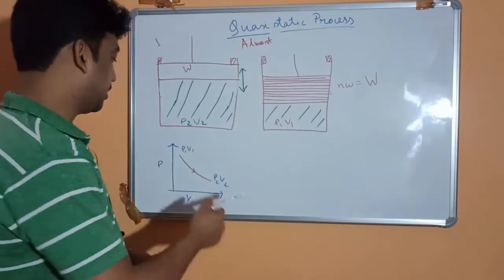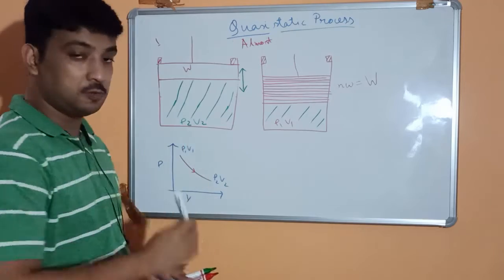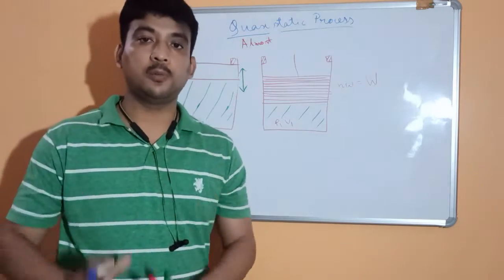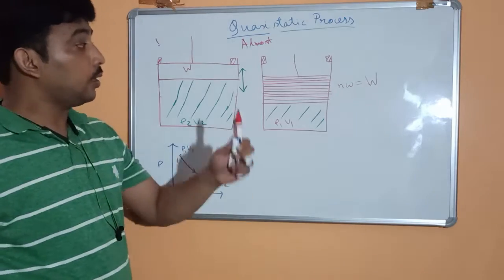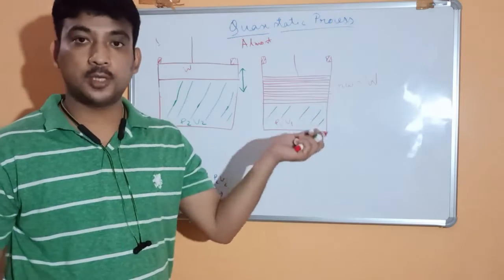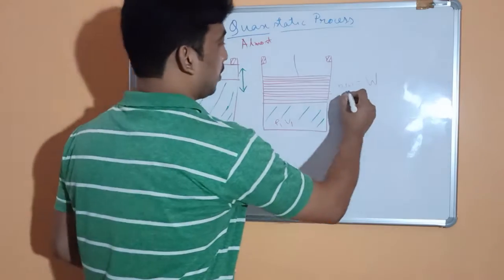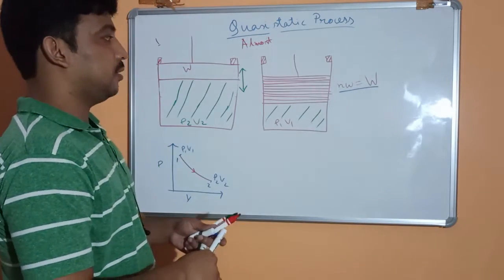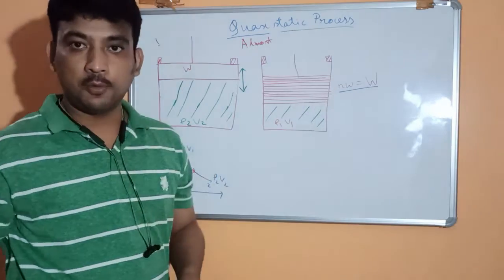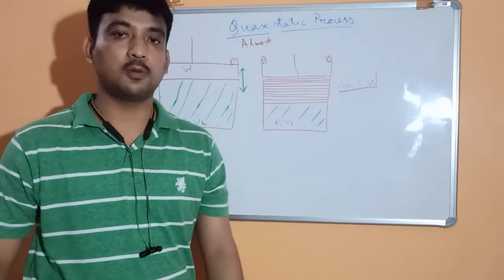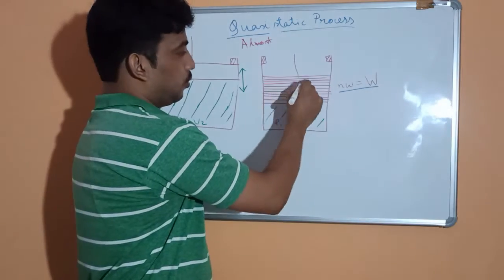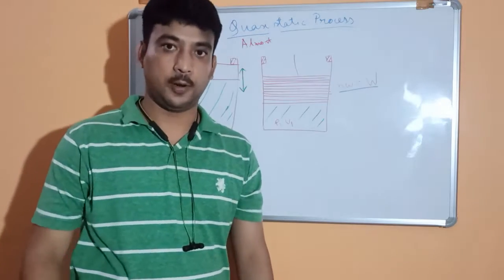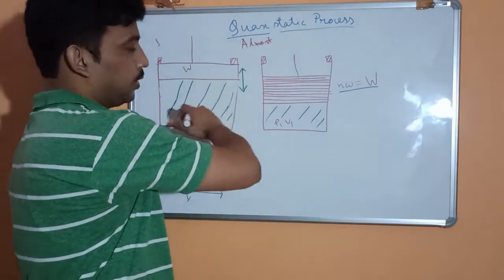So the gas changes state from p1, v1 to p2, v2. Points one and two are equilibrium points, so in this normal process we have only two equilibrium points. Now let's look at a second setup with the same total load W and same initial conditions p1, v1 — but this time the single load W is divided into n number of small loads.